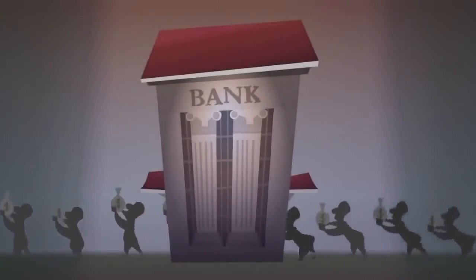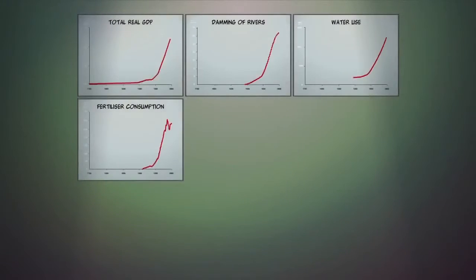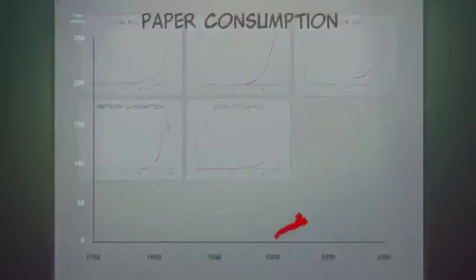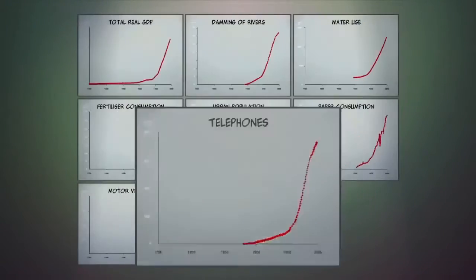Partly through this debt system, the effects of economic growth have been spectacular: in GDP, damming of rivers, water use, fertilizer consumption, urban population, paper consumption, motor vehicles, communications, and tourism.